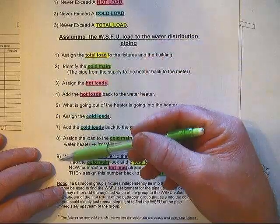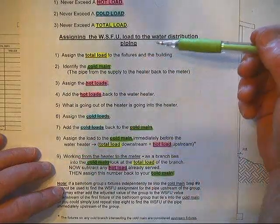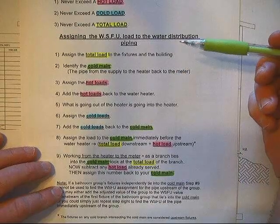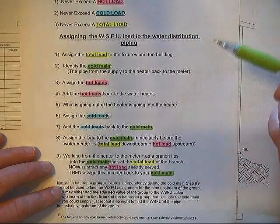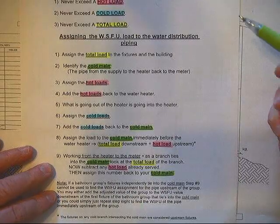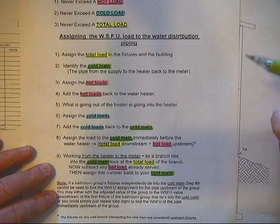This is a nine-step process that's been simplified basically to assure that we get the proper WSFUs, water supply fixture units, on all of the piping within the building so that we can size it appropriately.